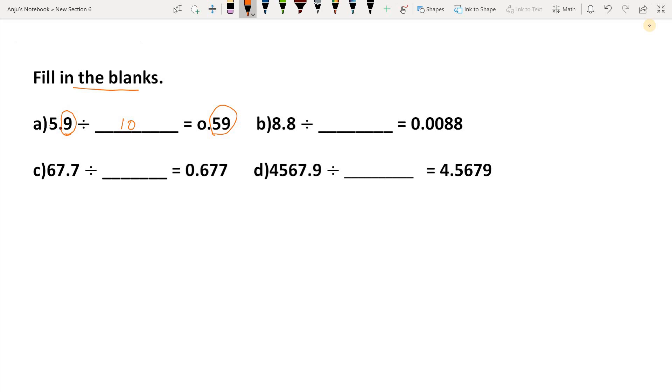Next, 8.8 divided by what gives 0.0088? Students, here we have one decimal place in the question, but in the answer we have four decimal places. This means the decimal point moved three digits. But here in the integral part we have only one digit, so we will add two zeros before the 8, and then the decimal point comes. So it means it is divided by 1000.